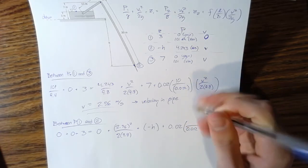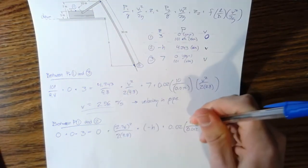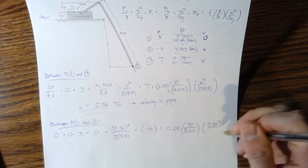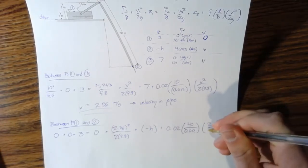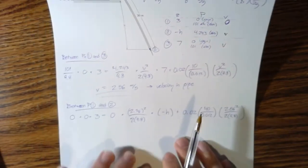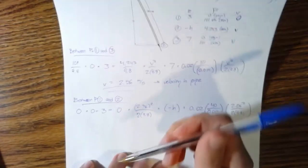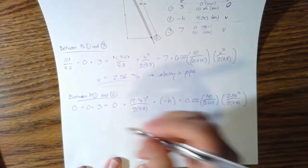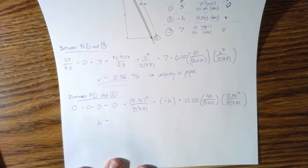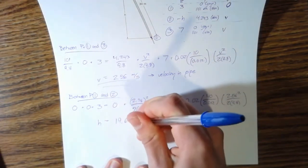Then we have the same friction factor multiplied by, same diameter, but this time the length is 10 plus 30, 40 meter length, the velocity that we just calculated, 2 times 9.8. Now this is just add this over, subtract 3, multiply everything out, have your calculator do all the heavy lifting, and you'll get h is equal to 18.6 meters.